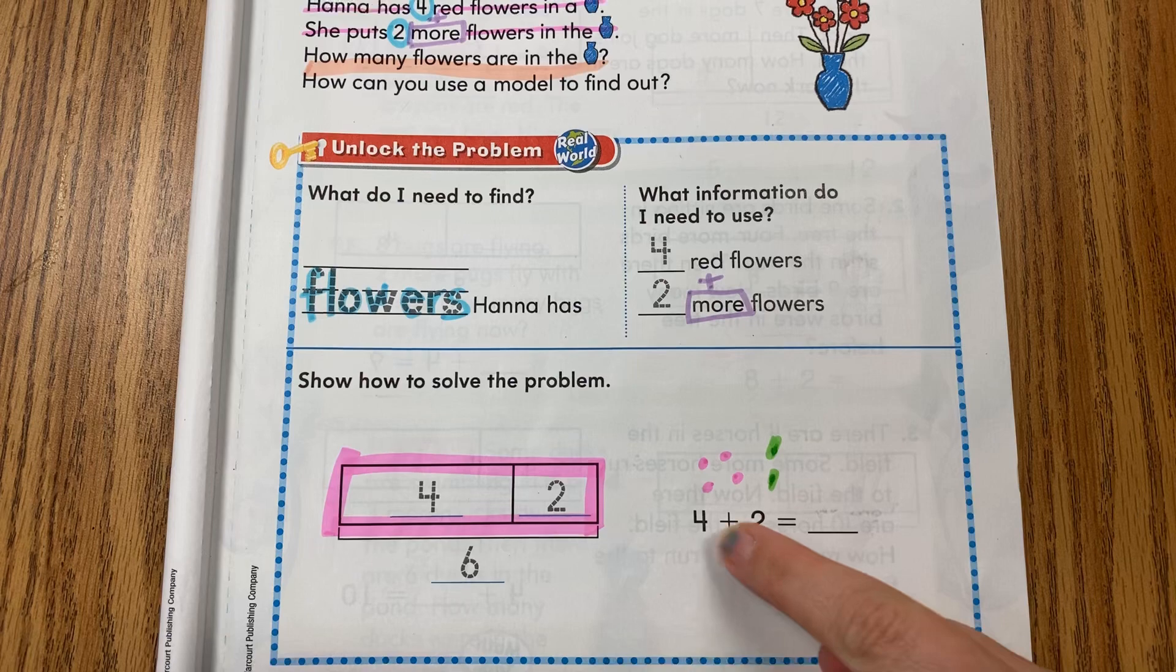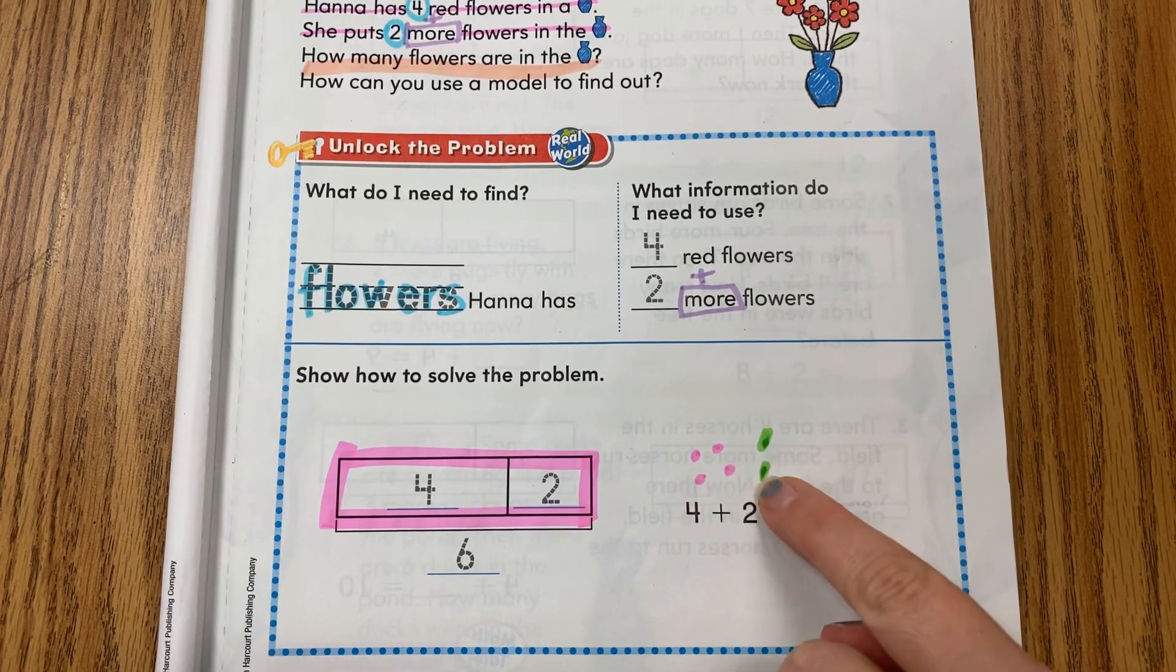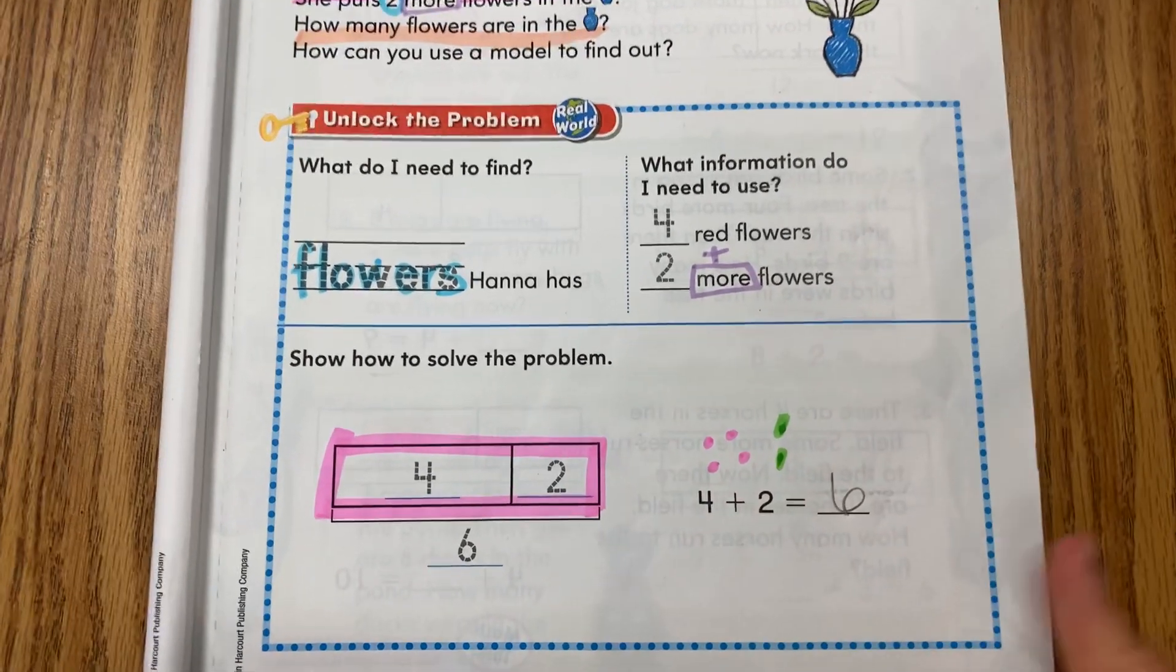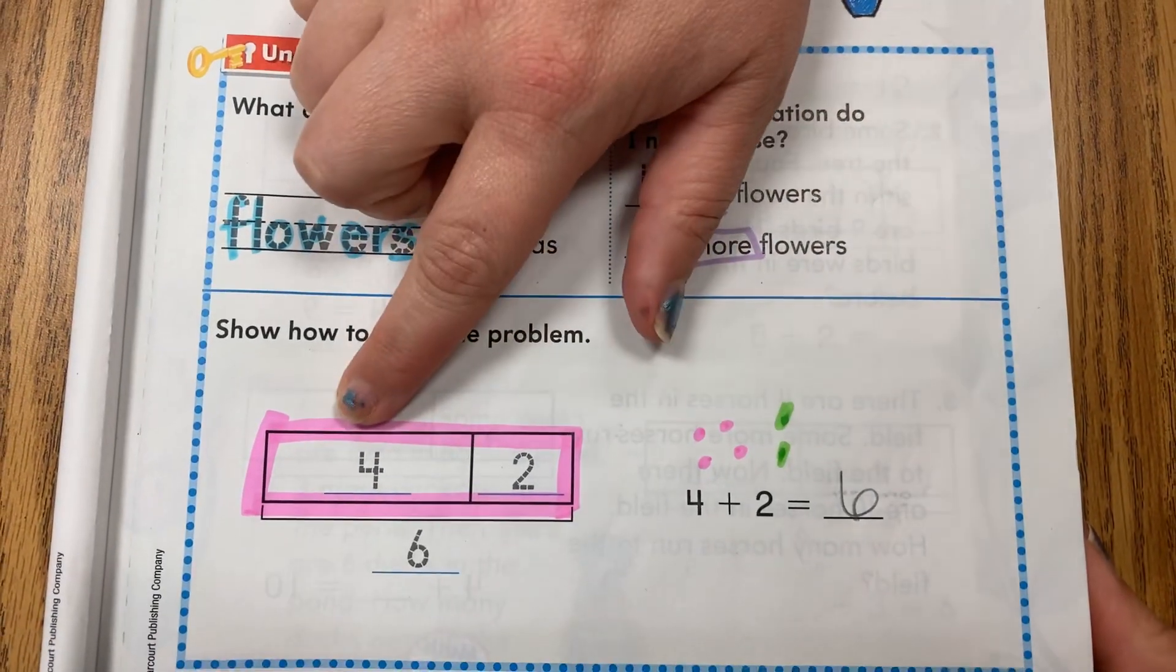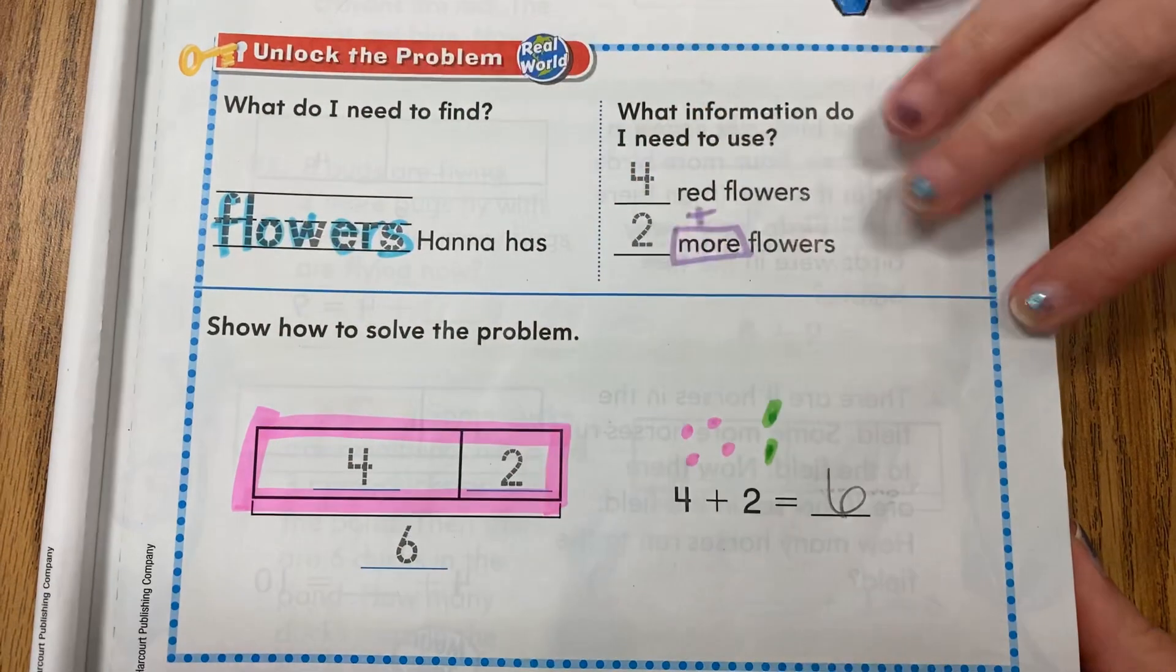And two more: one, two. This is going to help you solve your question. So four and two more is a total of one, two, three, four, five, six. Now that's the part that's all been review.